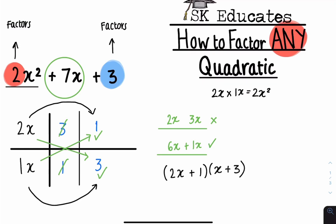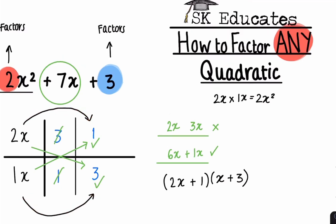Just to reiterate: to find the column that works, we cross multiply. When you've found the column that works, you then write the double bracket using the corresponding number in that row. If you're a bit confused, don't worry — it's very normal. I'm going to go through a couple more examples until you understand it completely.